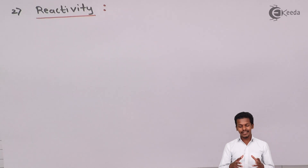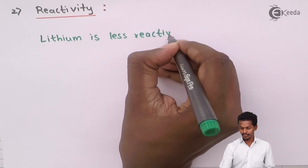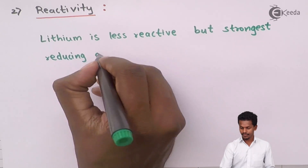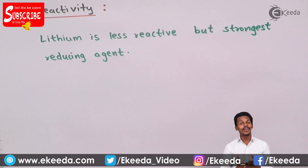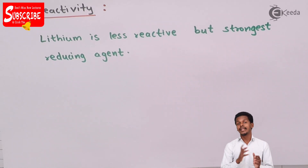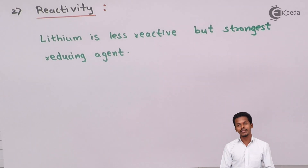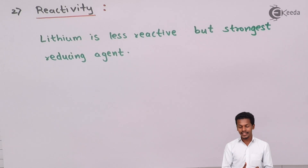The next property is reactivity. Based on reactivity, we can differentiate how lithium is different from the other elements. Lithium is less reactive, but it is the strongest reducing agent. There are also certain reactions to discuss — for example, when lithium undergoes a combustion reaction with oxygen or with nitrogen, it forms certain compounds: the oxides of lithium or the nitrides of lithium, which are quite different in properties from those formed by other group 1 elements.